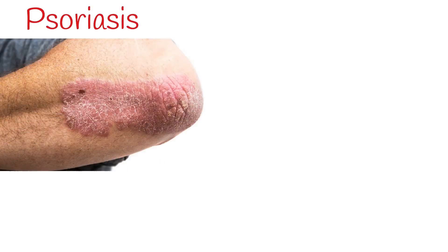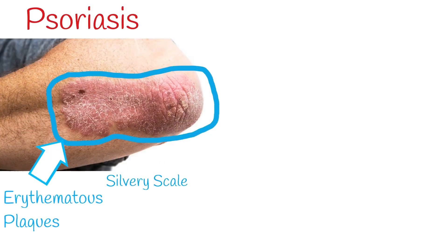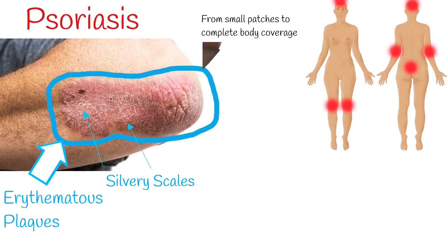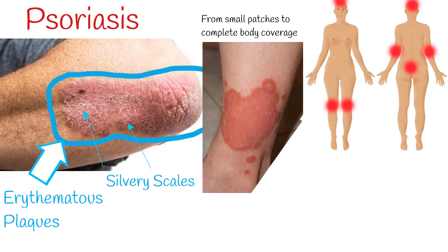Psoriasis presents as well-defined erythematous plaques covered with silvery scales, commonly over the scalp, extremities, particularly over the knees and elbows, and the lumbosacral region.